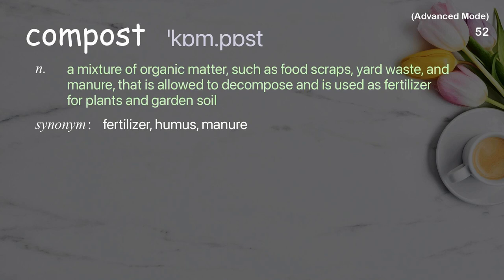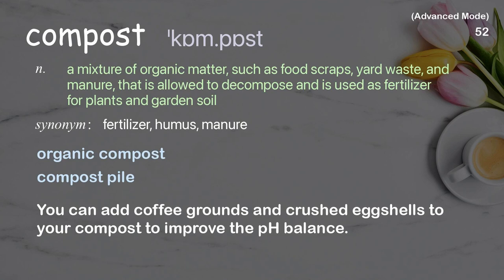Compost: A mixture of organic matter such as food scraps, yard waste, and manure that is allowed to decompose and is used as fertilizer for plants and garden soil. Examples: Organic compost. Compost pile. You can add coffee grounds and crushed eggshells to your compost to improve the pH balance.